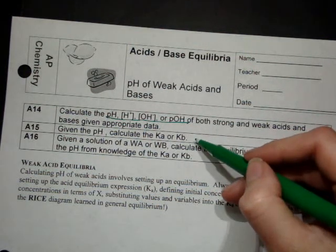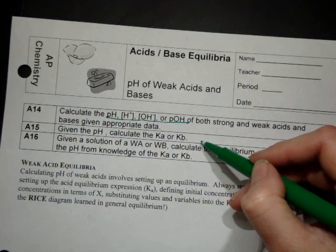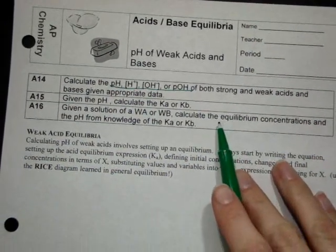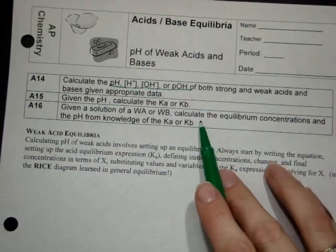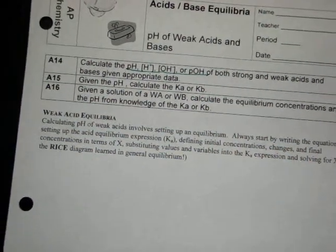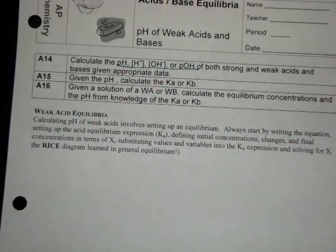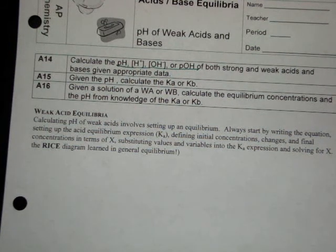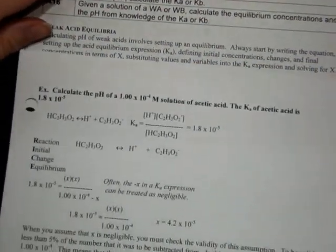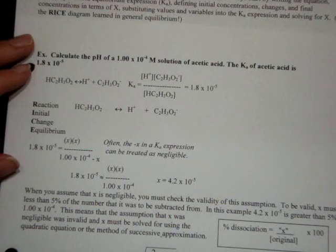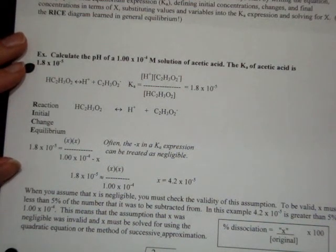We're going to use Ka's and Kb's, calculating pH and vice versa. When doing weak acid and base equilibria, we use the same general RICE equilibrium setup. Only this time, instead of having Keq, we're going to have Ka. There's a lengthy example problem already set up in the notes.